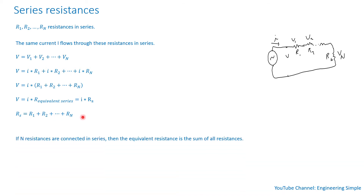So for n resistances connected in series, the equivalent series resistance is just the sum of all the resistances in series.